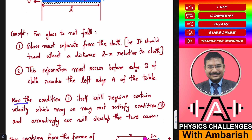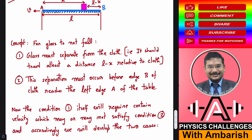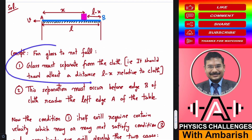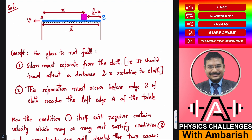Condition one itself will require a certain velocity which may or may not satisfy condition two. First we'll satisfy condition one and find the minimum velocity required. Once we get that minimum velocity, we'll see what constraint applies for different values of x. It will turn out that if x is beyond a certain range, that velocity will not be sufficient and we'll have to increase it.